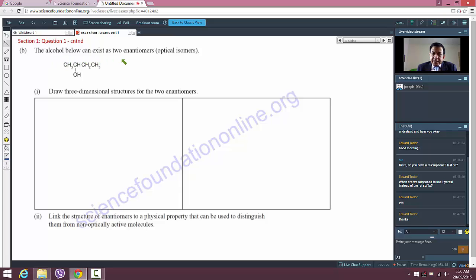The alcohol below can exist as two enantiomers or optical isomers. Look at this molecule here - there's a carbon atom connected to a CH3 group on the left. If we look at it as a two-dimensional projection of a three-dimensional molecule, there's a hydrogen atom on the top, an OH group on the bottom, and a CH2CH3 on the right.